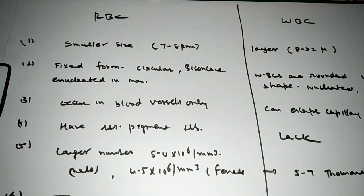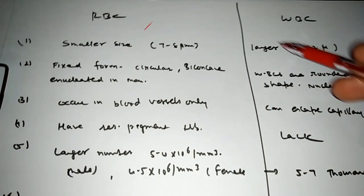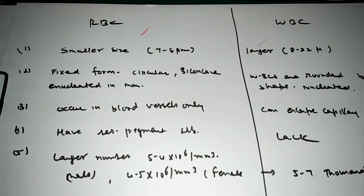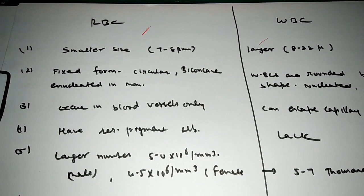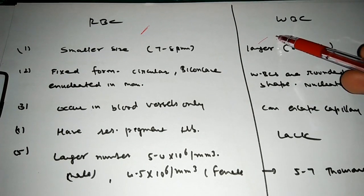Hey guys, welcome back. Today I am back with a new topic, a very fundamental topic: the basic difference between RBC and WBC. RBC, if I elaborate, is the red blood cell, red blood corpuscle. WBC: white blood corpuscle cells.